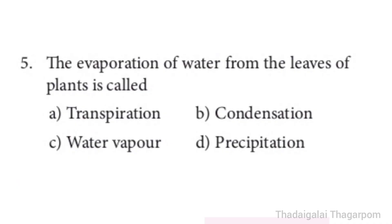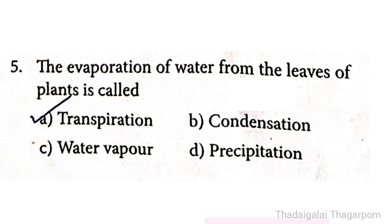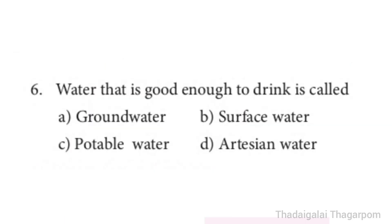5th one: The evaporation of water from the leaves of plants is called — Transpiration, Condensation, Water vapour, or Precipitation. The correct answer is A option: Transpiration. The evaporation of water from the leaves of plants is called Transpiration.